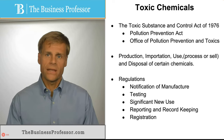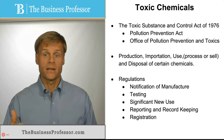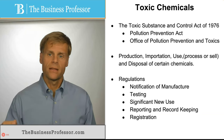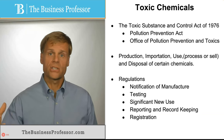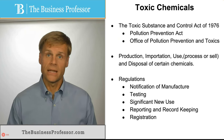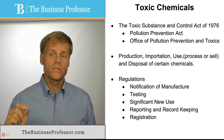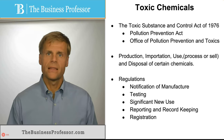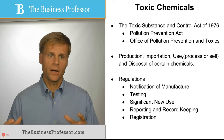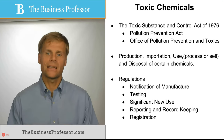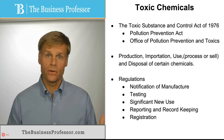What is regulated with regard to toxic chemicals? Number one, production — the process of actually producing the chemicals. Importation — bringing it into the United States. Use — the actual application of it. And more importantly, the process of combining elements to make it, bottling it, selling it — all of these things. And then, the disposal of those chemicals.